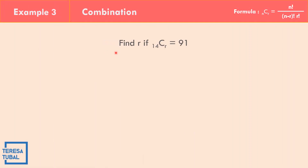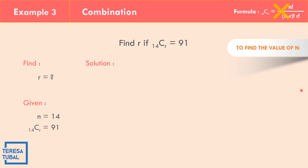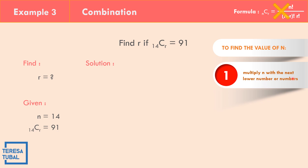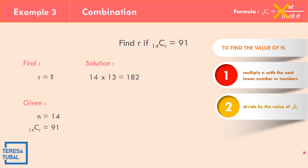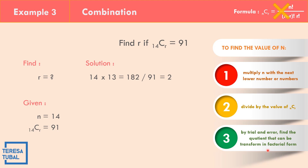In example number 3, find R if C(14,R) equals 91. Given n equals 14 and C(14,R) equals 91. Step 1: multiply 14 times 13 equals 182. Step 2: divide 182 by 91 equals 2. Step 3: the quotient 2 can be transformed into factorial form — 2 equals 2 times 1, which is 2 factorial. Therefore R equals 2.